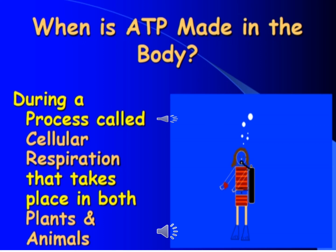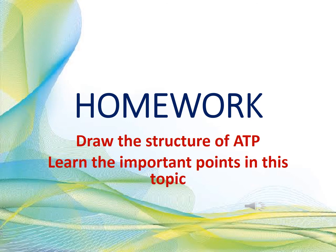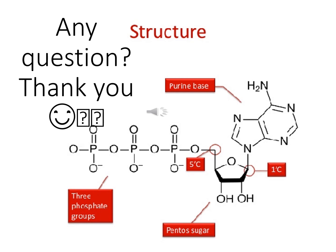When is ATP made in the body? It is made during a process called cellular respiration, which takes place in both animals and plants. We will learn about cellular respiration in coming lectures. ATP is present in all types of organisms — plants, animals, and microorganisms. Your homework is to draw the structure of ATP showing the three basic parts: the base, ribose sugar, and phosphate groups. Read and highlight the whole topic from the book, and if you have any questions, you can ask me. Thank you, dear students — take care and have a nice day.